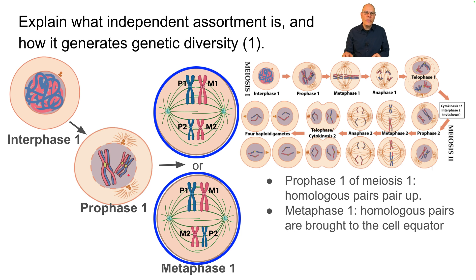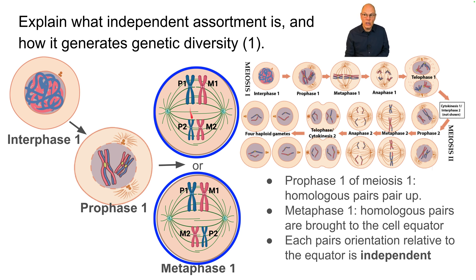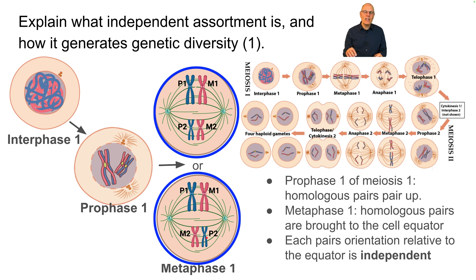During metaphase one, they're pulled by spindle fibers, just as happens in mitosis, to the cell equator. But the way that each pair gets dragged to the middle is independent of every other pair. So in this simplified system, it's possible that the paternal chromosomes might be on the left side and the maternal ones on the right side. It's equally possible to have this arrangement versus this arrangement — it's as random as flipping a coin. And that randomness is essential.